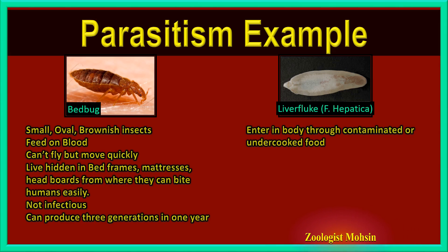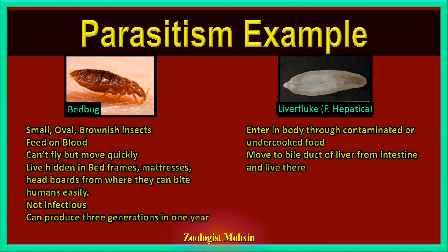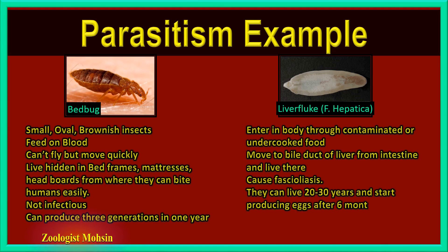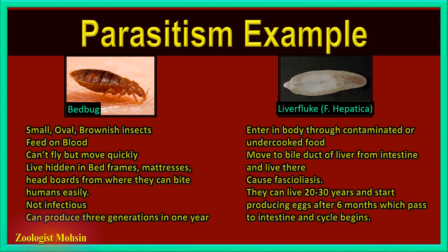Liver fluke is an endoparasite of humans and other organisms. It enters the body through contaminated or undercooked food like raw fish. Once inside, it moves to the bile duct of the liver from the intestine and lives there. The disease caused by liver fluke is fascioliasis. Liver flukes can live 20 to 30 years and start producing eggs after six months, which pass to the intestine and the cycle begins again. Since liver fluke lives inside the body, it is an endoparasite.